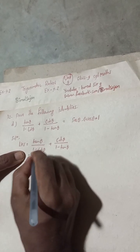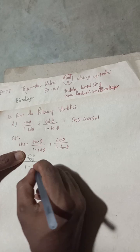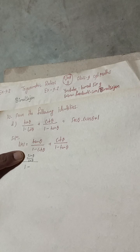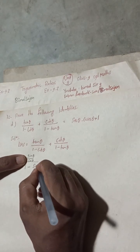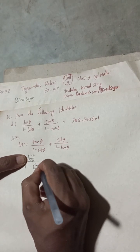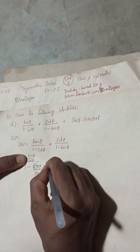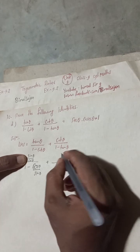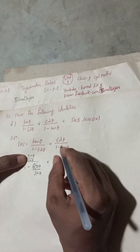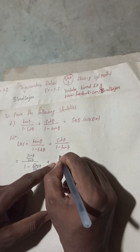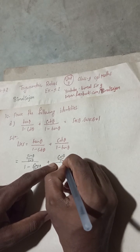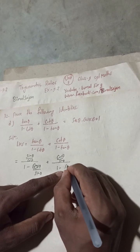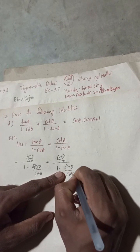tan θ can be written as sin θ / cos θ. Here 1 minus — cos θ can be written as cos θ / sin θ. And this plus cos θ can also be written as cos θ / sin θ. Then 1 minus tan θ can be written as sin θ / cos θ.